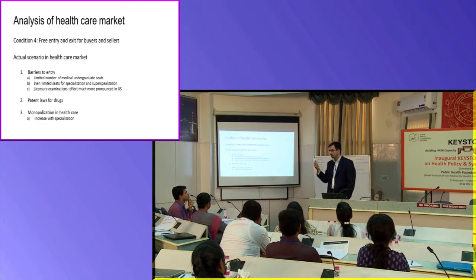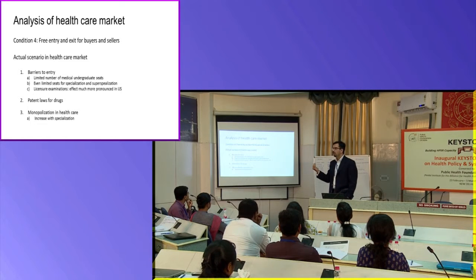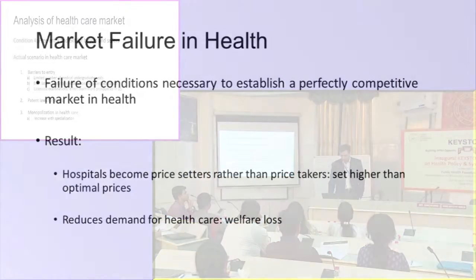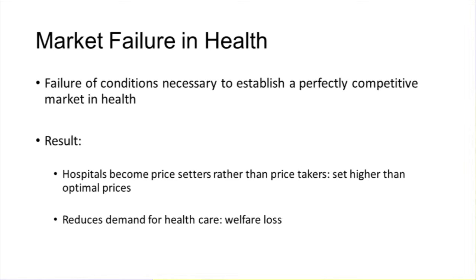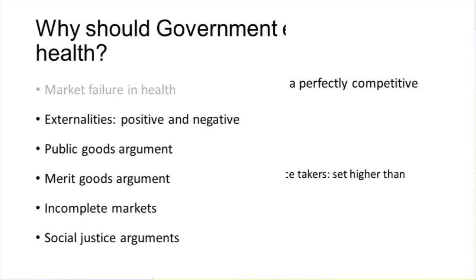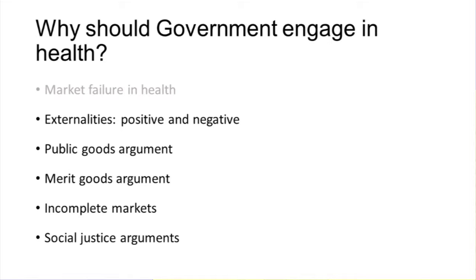All four essential conditions — required for setting up perfect competition — are in some way getting violated in the field of health. This leads to what we call the failure of the market in health. The result is that providers become price setters rather than the market setting the price, which creates a problem of welfare loss, making it inefficient to allocate resources through this market — and which is also inequitable, because you push out the poorer and marginalized people. This brings us to the question of the role of government in the field of health.